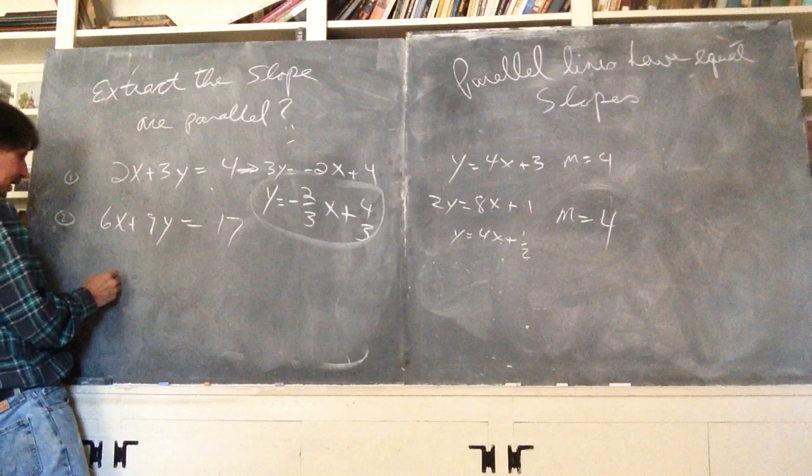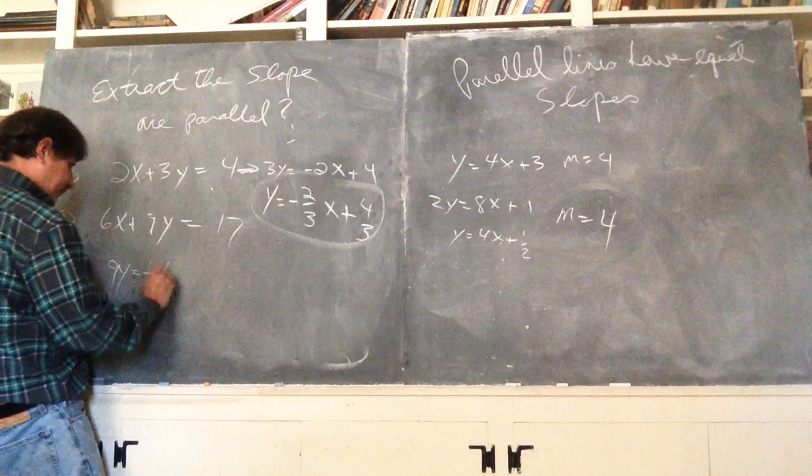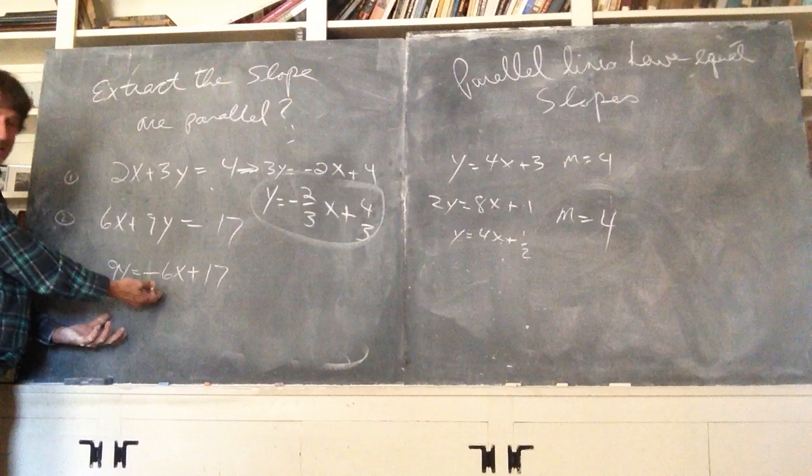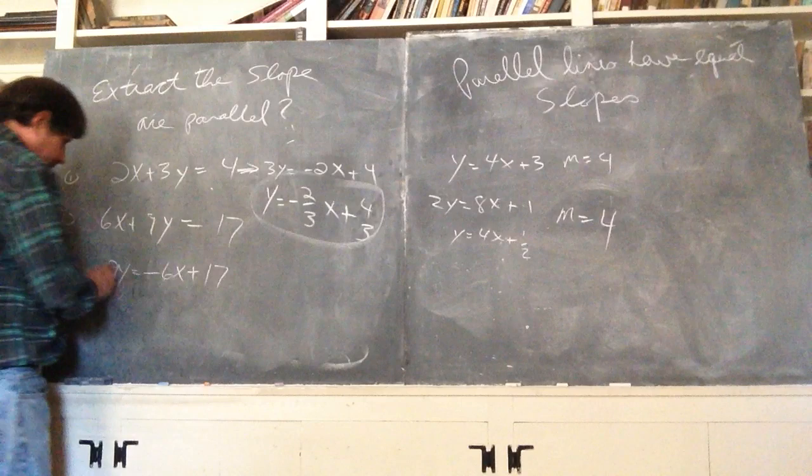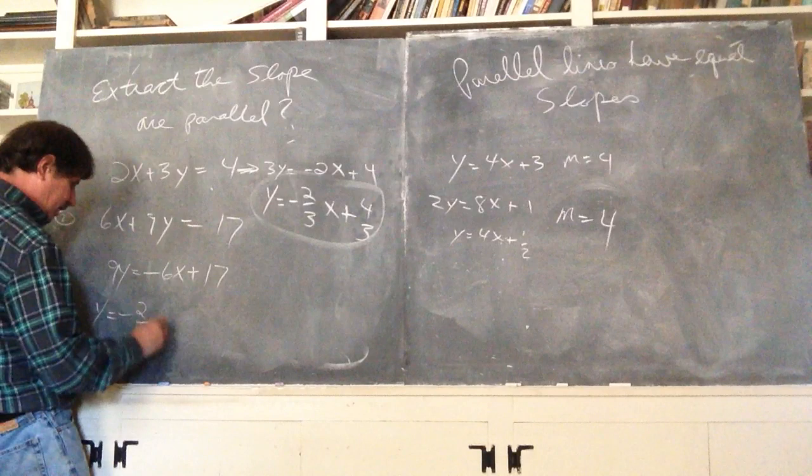That's one of them. I'm going to work with the second one. 9y equals negative 6x plus 17. Notice, I keep the x first. That's my choice. You could be saying 17 minus 6x. That's your choice. The x-coordinate is the slope. Just remember that. So, I'm going to divide by 9 rather. Negative 6 ninths is negative 2 thirds x plus 17 ninths. Yes!